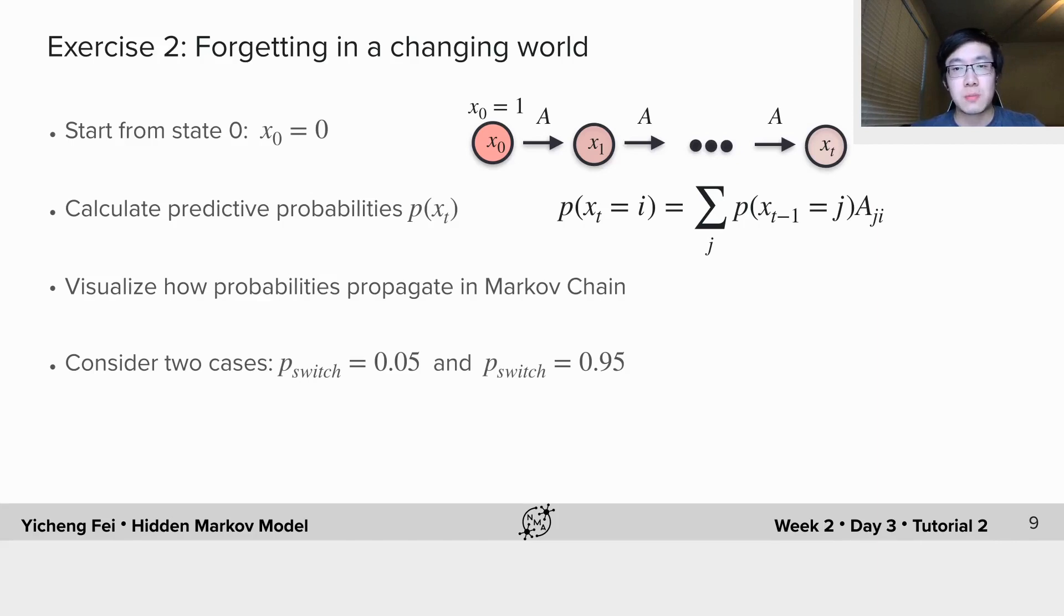What if the switching probability is large? In this case, we are almost certain that we will switch to the other state at next time. So if you plot the probability of state 0 over time, you will see a damping oscillation.